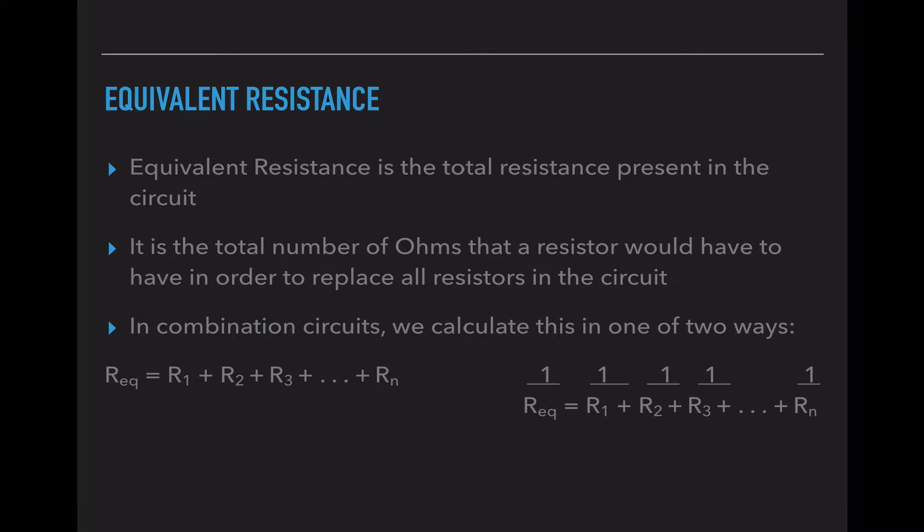So just as a reminder, equivalent resistance is the total resistance present in the circuit. It's the total number of ohms that a resistor would have to have in order to replace all resistors in a circuit. In combination circuits, we will be using both of the following calculations. We will be using REQ equals R1 plus R2 plus R3 plus R4 for series components.